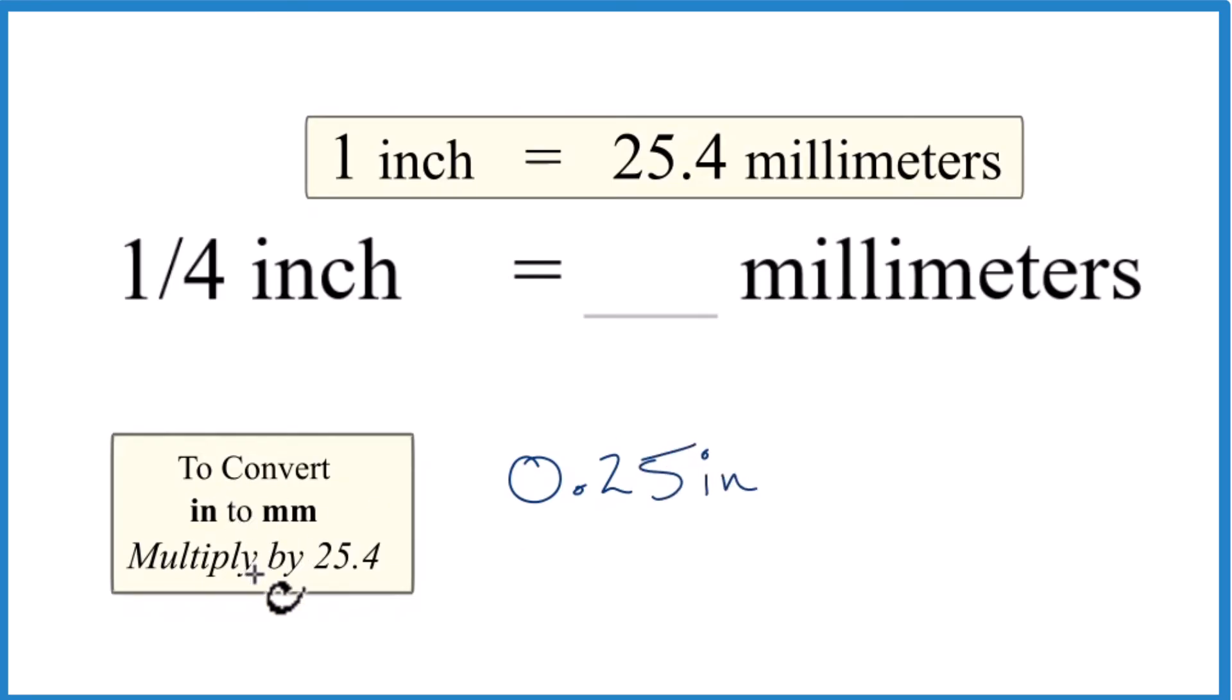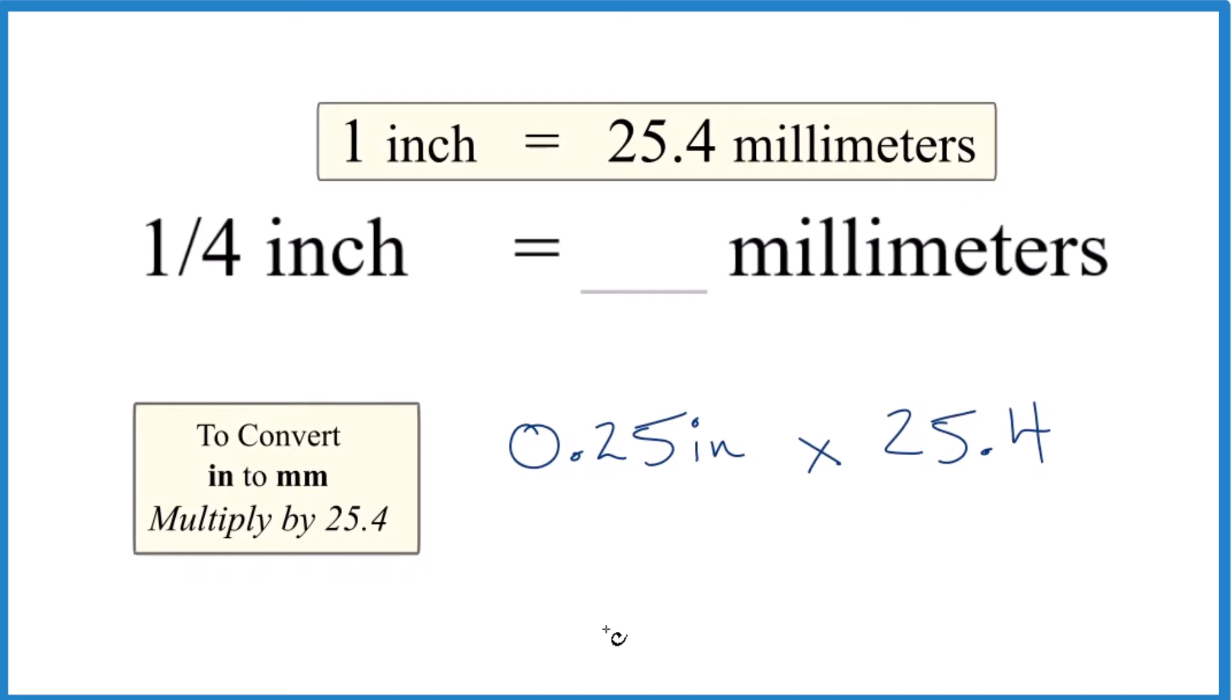And we said we multiply by 25.4 when we go from inches to millimeters, so times 25.4. And when we do that, we end up with 6.35. We said that would be millimeters.